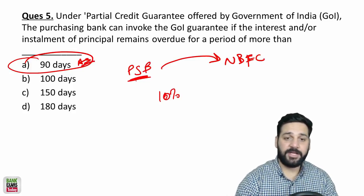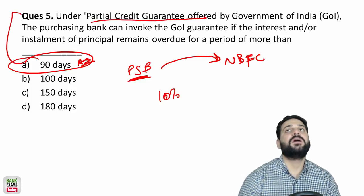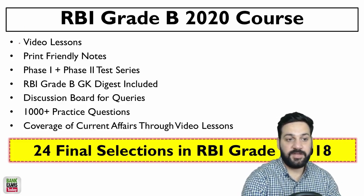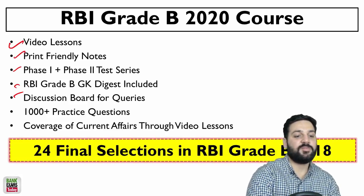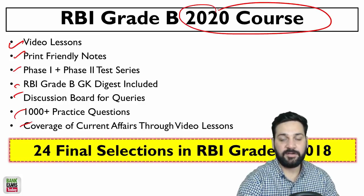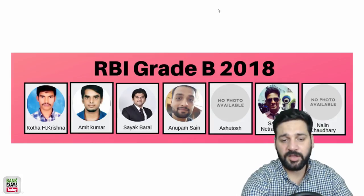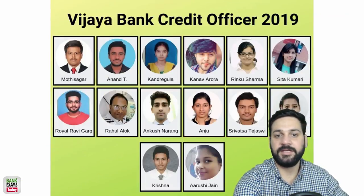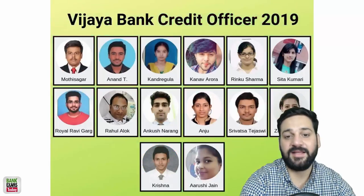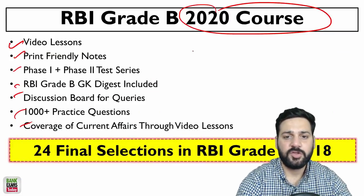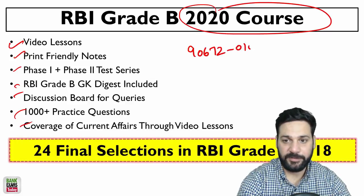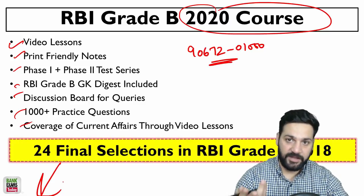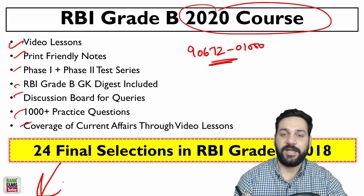A proper lecture on the partial credit guarantee scheme is part of the RBI Grade B 2020 course, which includes video classes, notes, test series, a discussion board, and practice questions. This is a one-year course. Students who have cleared 2018 and 2019 exams, SEBI Grade A, NABARD Grade A, and credit officer level exams are listed. You can WhatsApp your doubts to 9067200100. Please subscribe, like, and comment. Thank you and have a nice day.